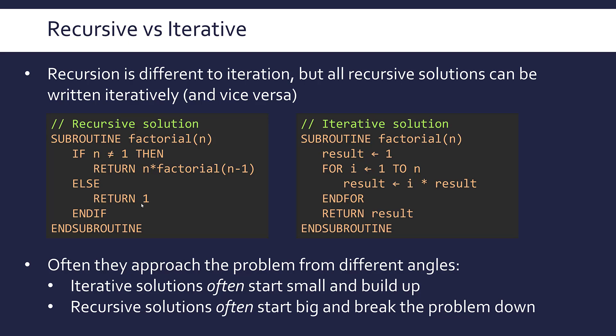So we're starting big and breaking it down again and again until we reach a simple base case. This works really well for divide and conquer problems. For instance, merge sort is a really good example of a usually recursive solution.